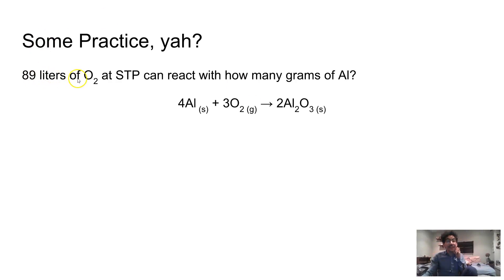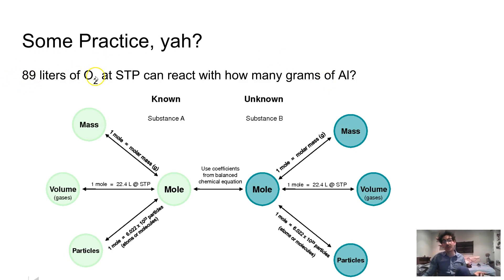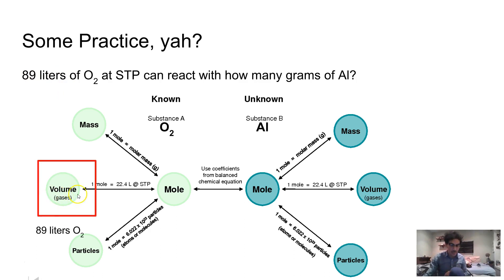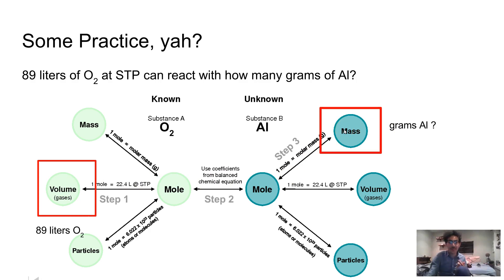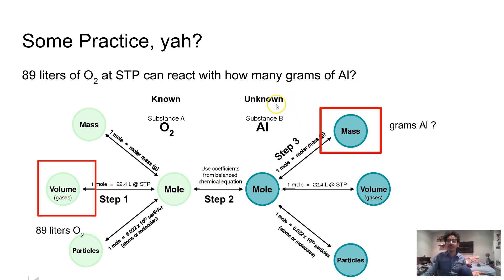We've got liters up in here. 89 liters of O₂ at STP can react with how many grams? Let's pull up that map again. O₂ is my known stuff, and I'm asking how many grams of aluminum, so aluminum is going to be my unknown. I'm starting with 89 liters — that's a volume — and I'm going to make my way to grams of Al, which is mass. I'm going to travel from here all the way to here in three steps: Step one, change from volume of O₂ to moles of O₂. Step two, change from moles of O₂ to moles of Al. Step three, change from moles of Al to grams of Al. I'll use the conversion factor one mole equals 22.4 liters at STP, then the coefficients from the balanced equation, then the molar mass of aluminum.